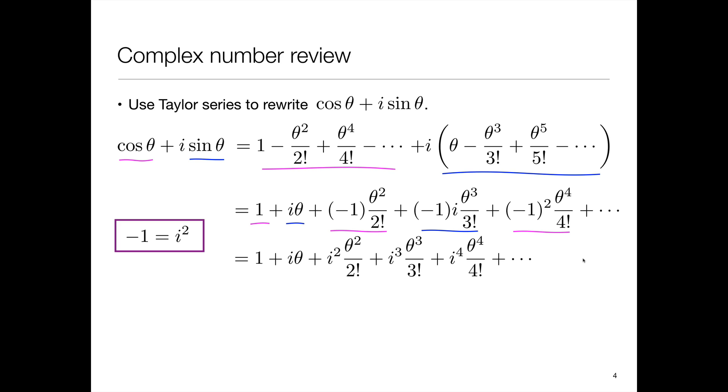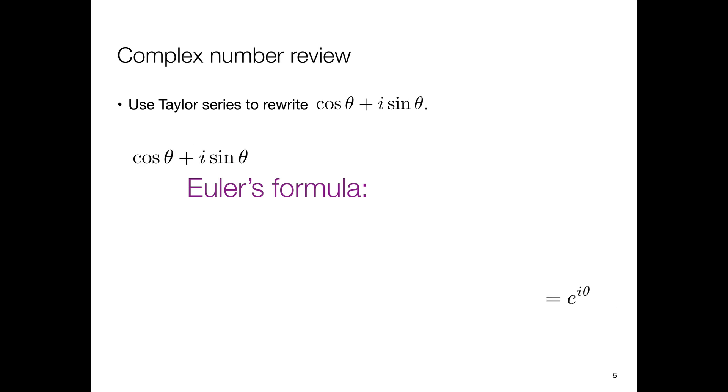Now this looks very much like the Taylor series for the exponential function. And so if we just group the i squared and theta squared, the i cubed and theta cubed, the i to the 4th and theta to the 4th, we now have exactly the form of e to the i theta from its Taylor series. So we can see that cosine theta plus i sine theta is equal to e to the i theta. And that is what we refer to as Euler's formula.